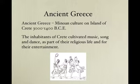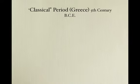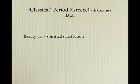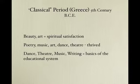On the island of Crete around 3,000 BCE, the inhabitants cultivated music, song, and dance as part of their religious life, for entertainment, and importantly for education. In the classical period — the 5th century BCE — this was the height of artistic development in the Greek world. Beauty and art provided spiritual satisfaction and fulfillment; poetry, music, art, dance, and theater were all vital in this period.